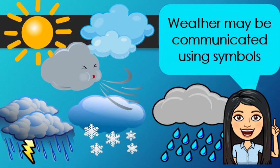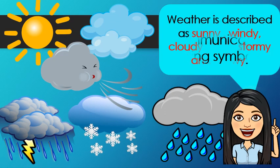Weather may be communicated using symbols. Let's go through these one by one. The weather is described as sunny, windy, cloudy, rainy, stormy, and snowy.